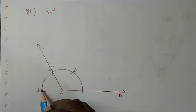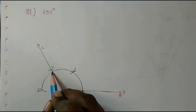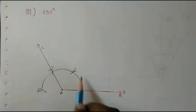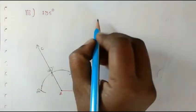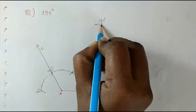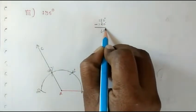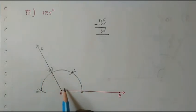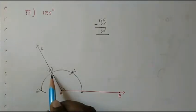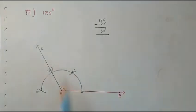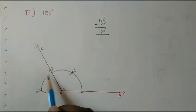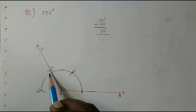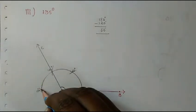This is 120 and this point is 180. From 180 minus 120 we get 60. So the remaining arc from C to the 180 point is 60 degrees. If I divide that 60 equally in half, I will get 30 and 30.